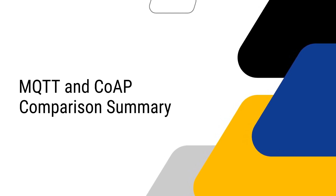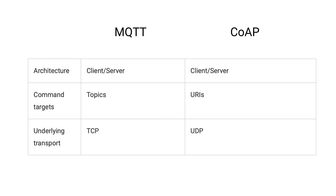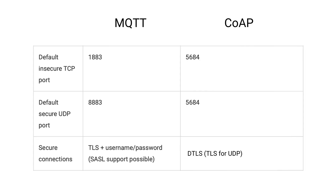Now that you understand the basics of MQTT and CoAP, let's compare them. Both have client-server architecture. Common targets are topics for MQTT and URIs for CoAP. MQTT is a layer over TCP, whereas CoAP works over UDP. For MQTT, connections are secured via TLS plus username-password. For CoAP, connections are secured via Datagram Transport Layer Security (DTLS).